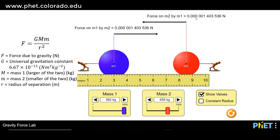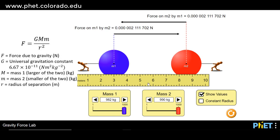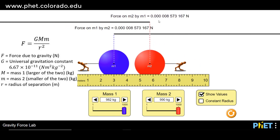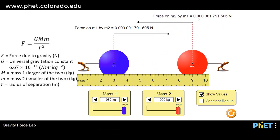That makes any masses other than planets produce quite a small gravitational force. By increasing the mass of mass 2, the force between the two objects increases — the greater the mass, the greater the gravitational force. You'll notice both the force of M1 from M2 and the force of M2 from M1 are exactly the same. This is Newton's third law — equal and opposite pairs of forces. If we move objects closer together, the gravitational force increases; if we separate them further apart, the gravitational force is reduced.